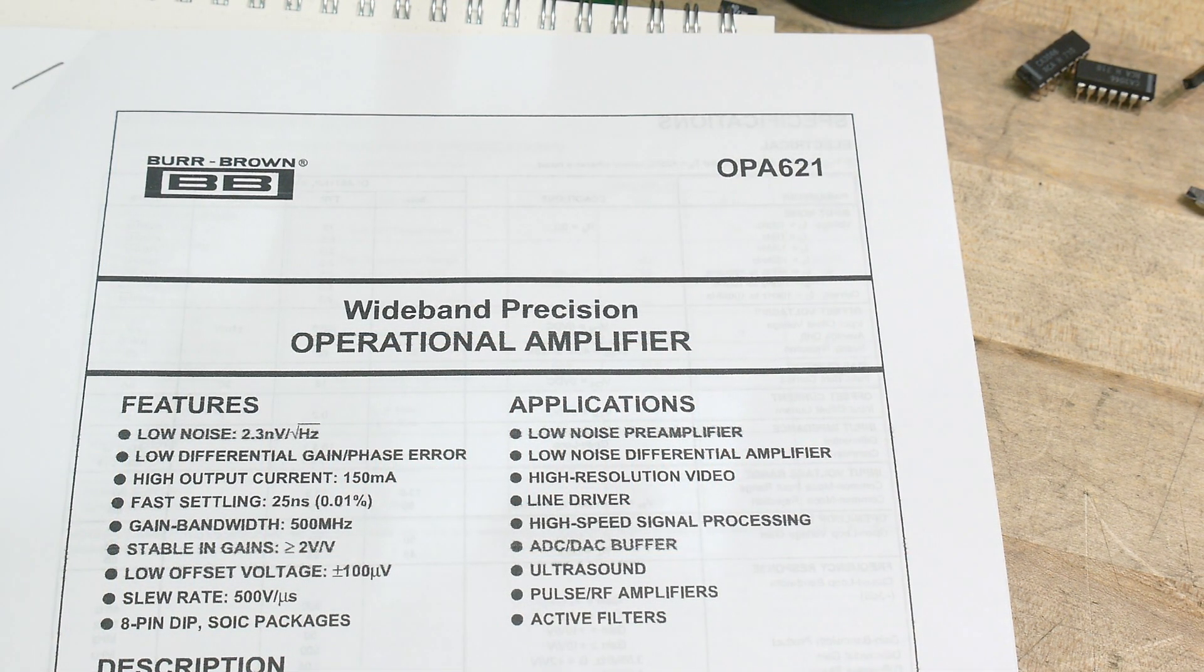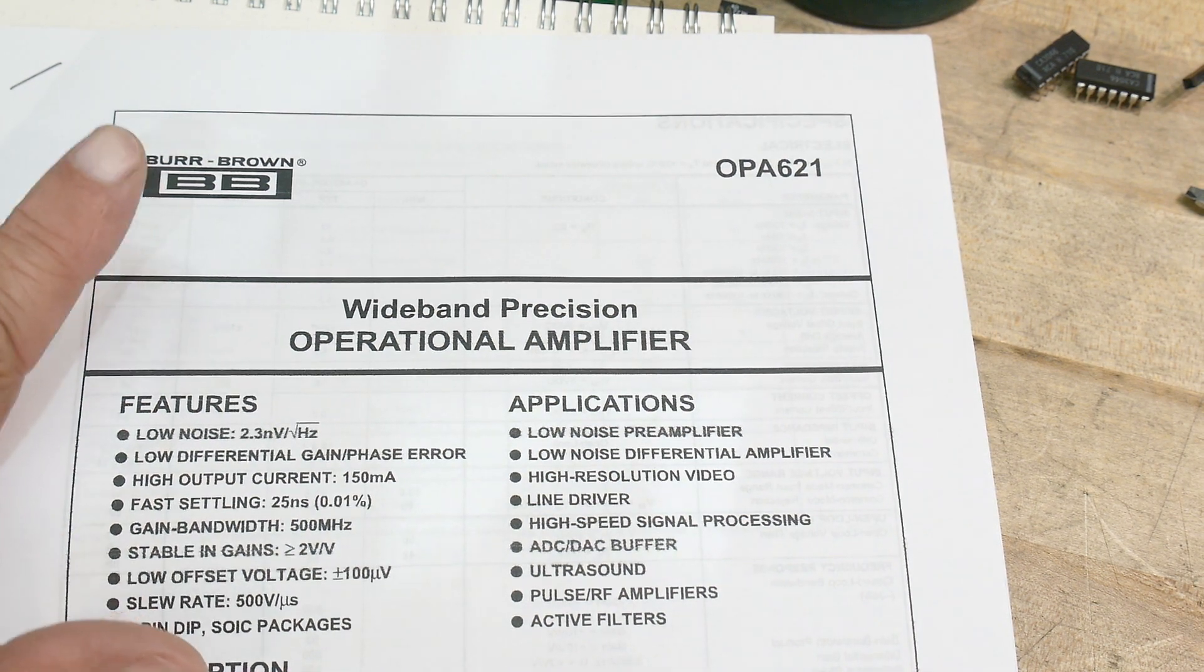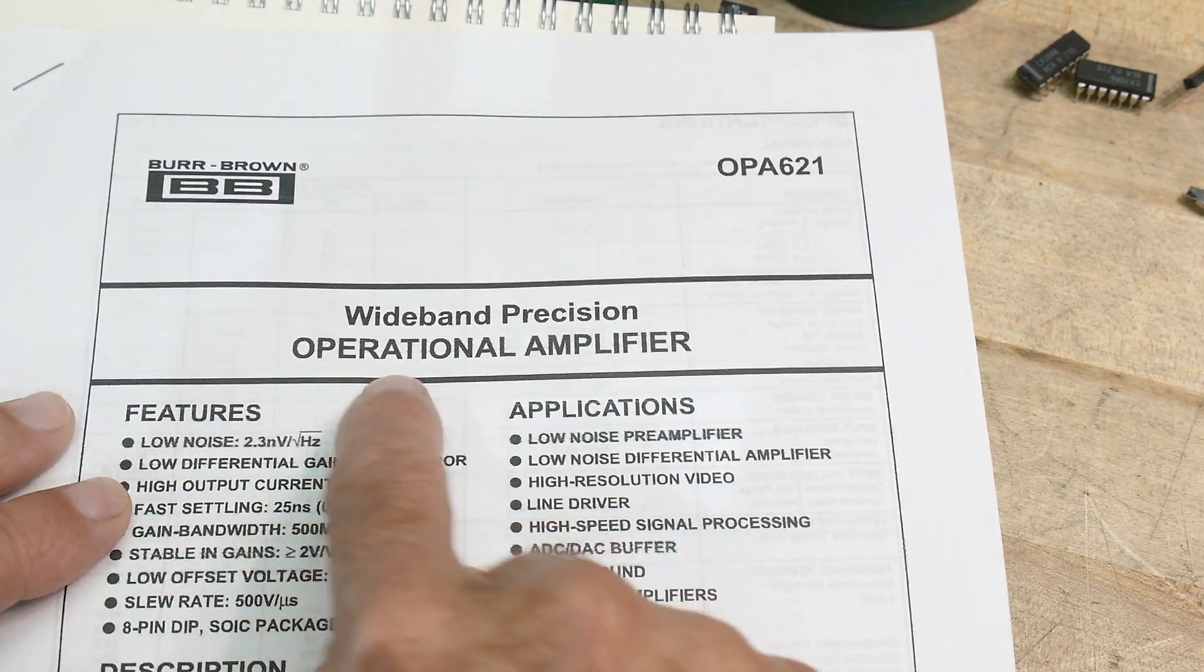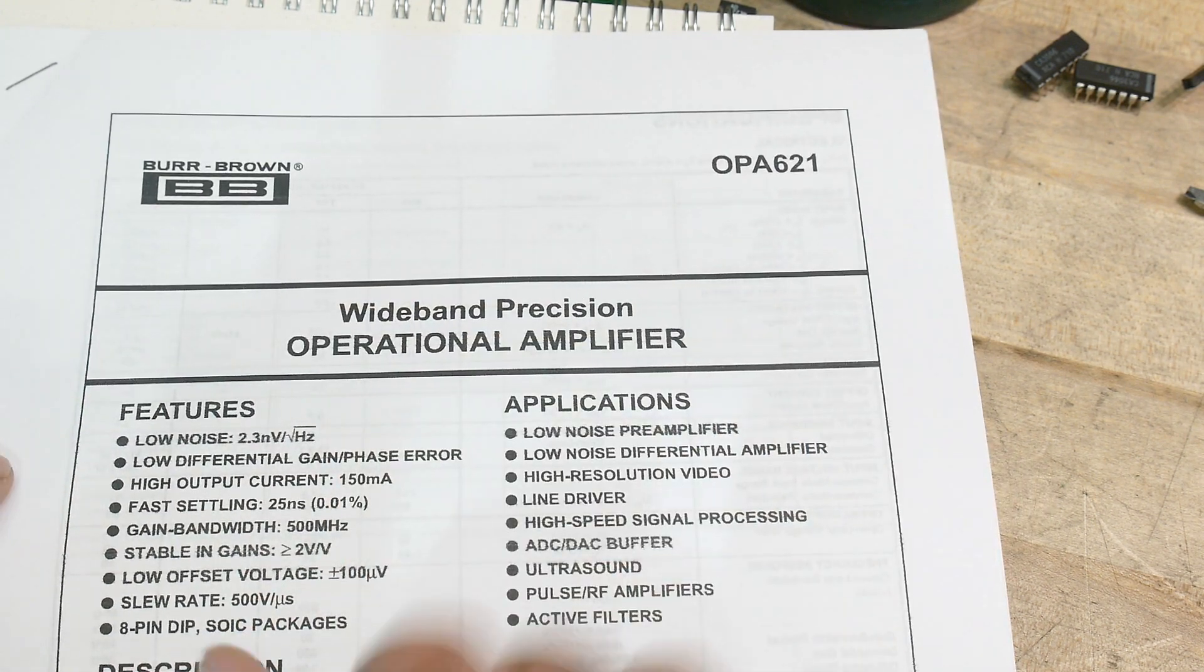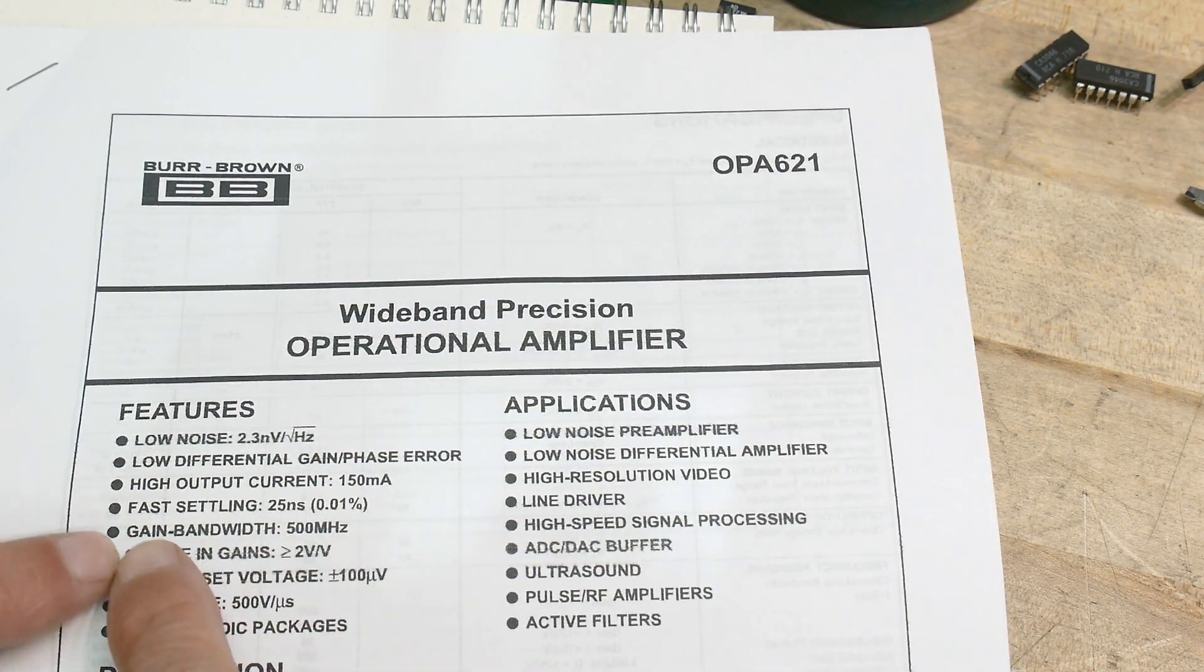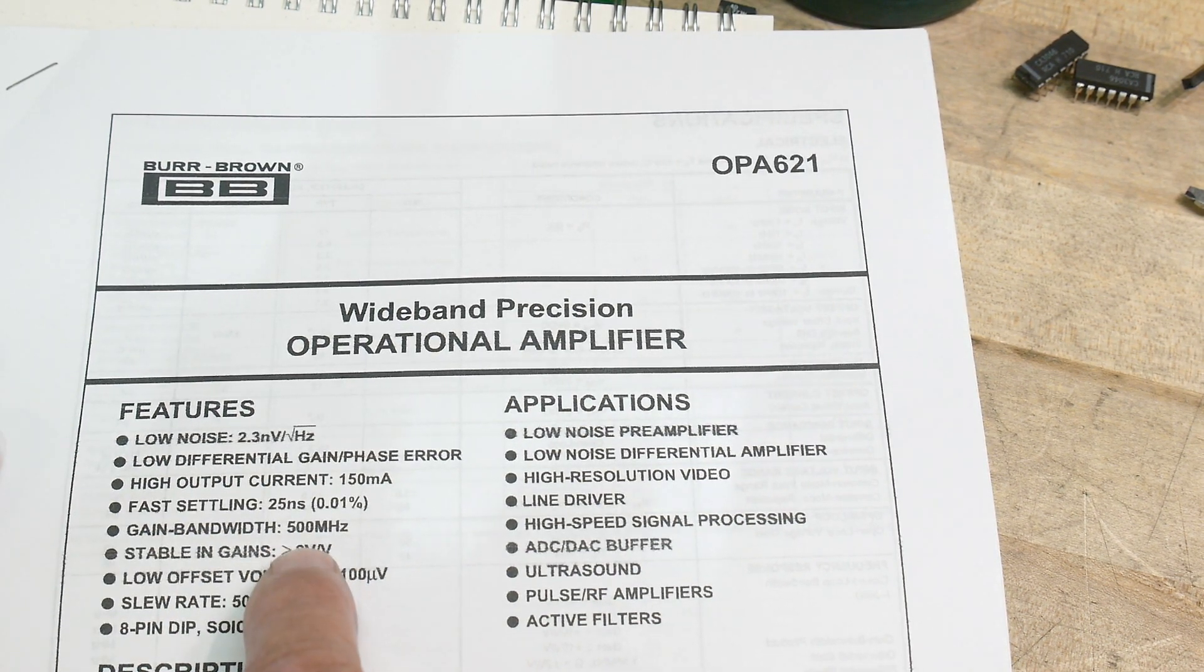Alright, chip of the day is an OPA621, a fancy wideband operational amplifier. This is a pretty special op-amp with a gain bandwidth product of 500 megahertz, so it's a screamer.